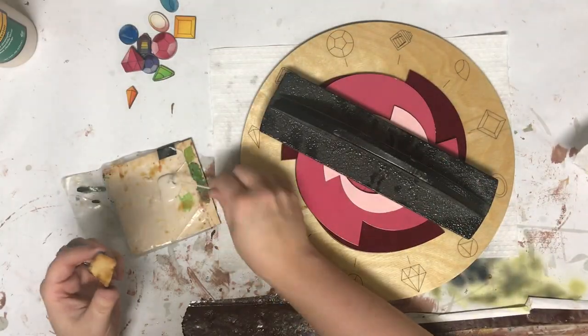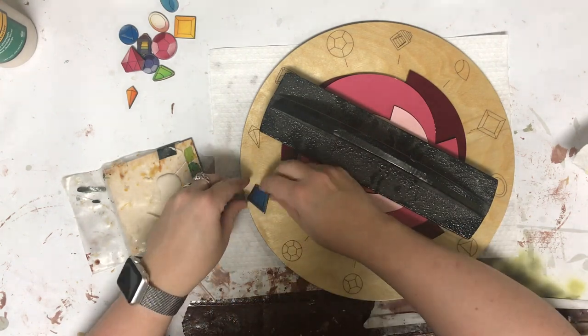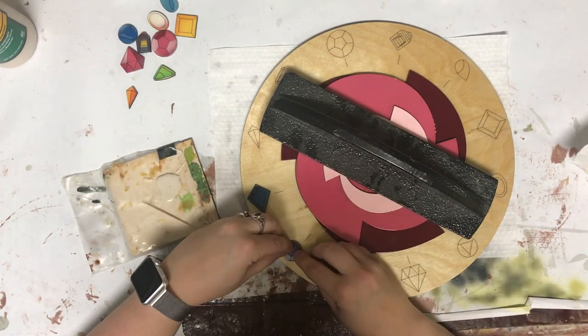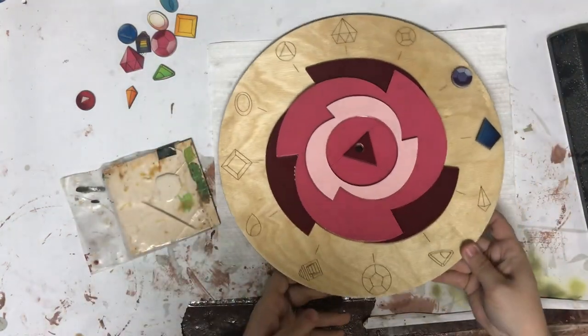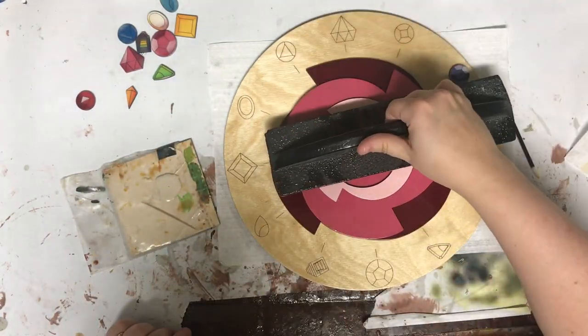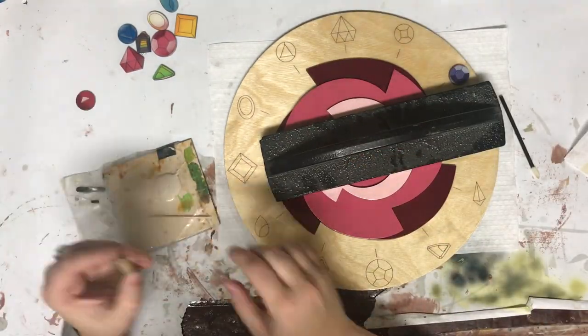Time to start gluing on the gems. Blue diamond. Amethyst at two o'clock. This was also when it registered that I had the whole thing upside down so I spun the clock around for my own sanity.